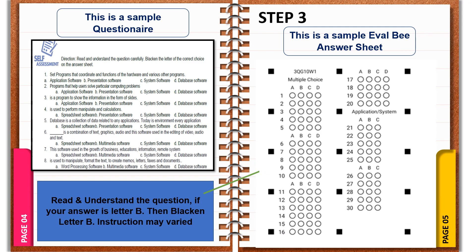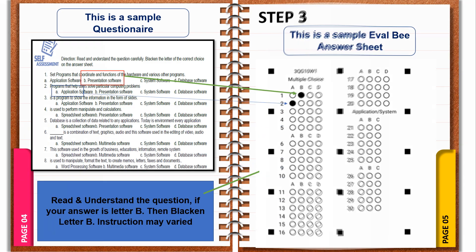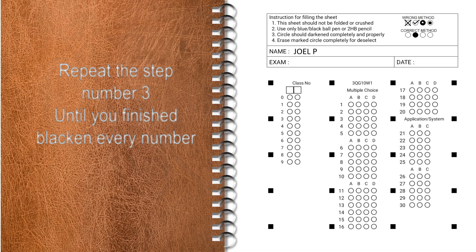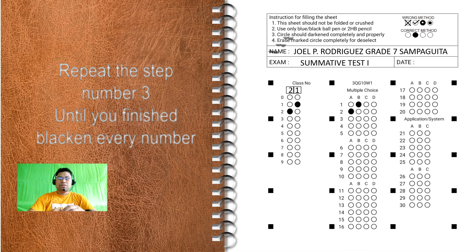Step 3: Read and understand the question. If your answer is letter B, then blacken letter B. Instructions may vary. Repeat step number 3 until you finish blackening every number.